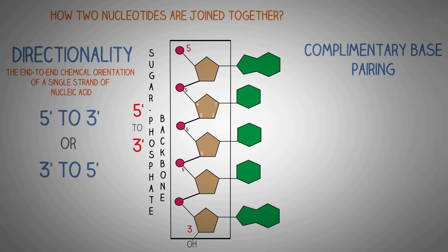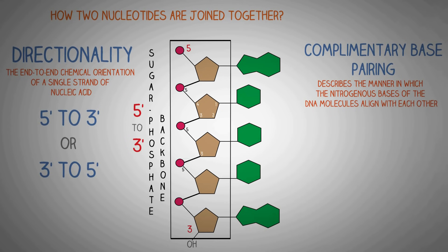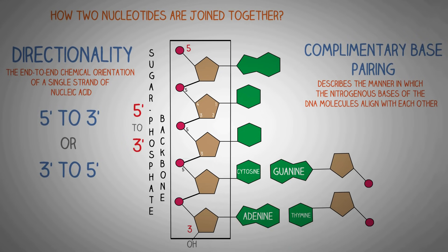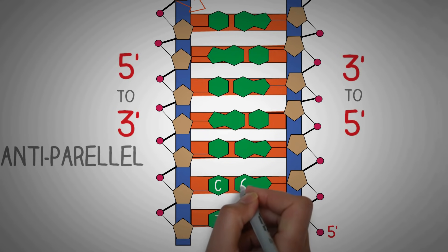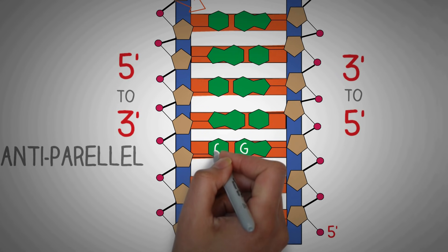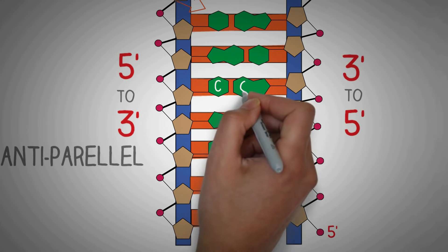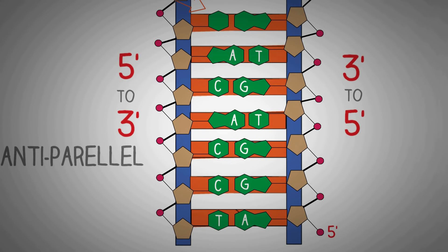The next important concept is complementary base pairing, which describes the manner in which the nitrogenous bases of the two DNA strands align with each other. Adenine always pairs with thymine, and guanine always forms hydrogen bonds with cytosine. In the DNA stepladder model, base A always pairs with base T, and base C always pairs with base G. These hydrogen bonds in the center hold the two strands of the DNA together.